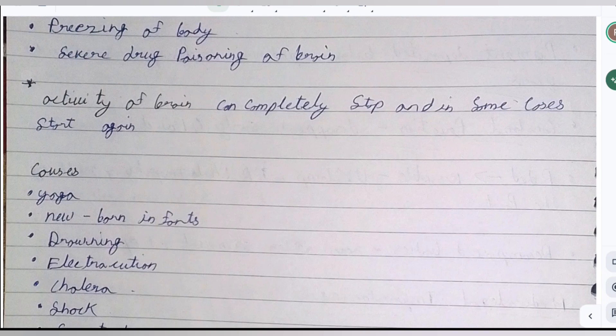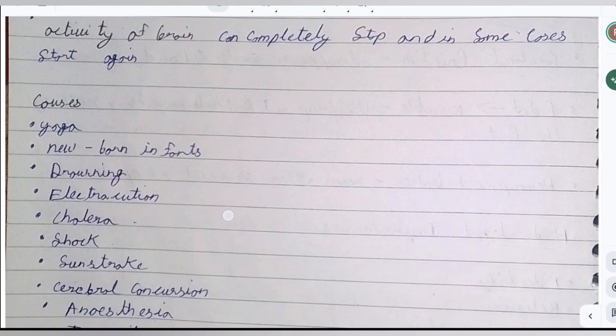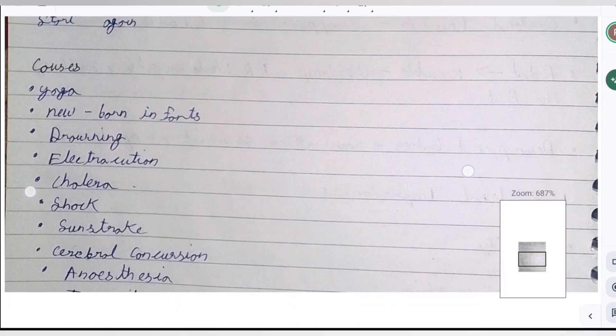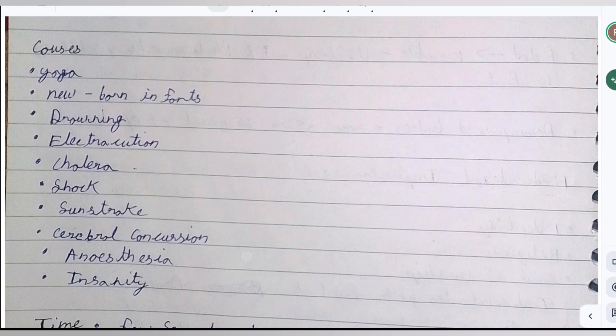Suspended animation may be produced voluntarily by practitioners of yoga and involuntarily in cases of newborn infants, drowning, electrocution, cholera, shock, sunstroke, cerebral concussion, anesthesia, and insanity.